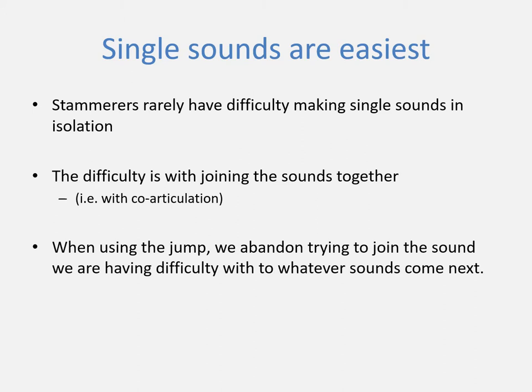Why is it so helpful, when you get stuck, to abandon trying to join the sounds up? The answer is that it's because most of the difficulty that stammerers encounter is with the process of co-articulation — in other words, with the process of joining the sounds of a word together. So, to get around this difficulty, the jump involves abandoning trying to join the sound that we're having difficulty with to the sounds that come after it. Most commonly, people who stammer experience difficulty joining the first phoneme or sound of a word with whatever comes next.